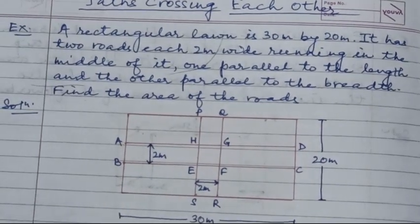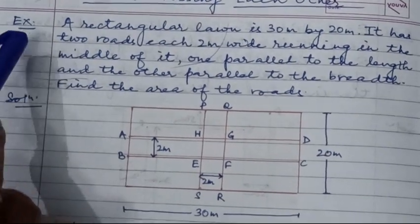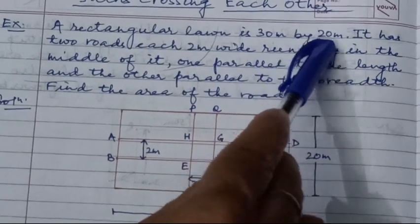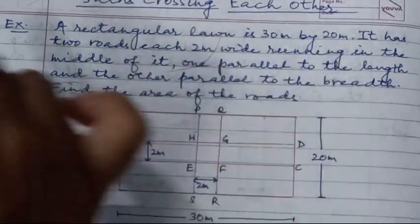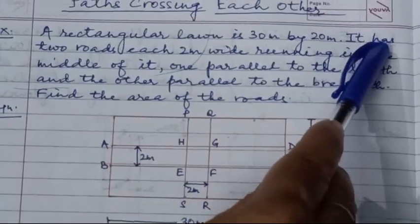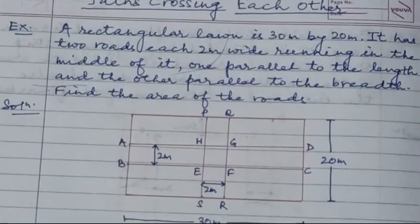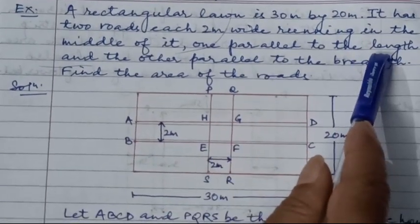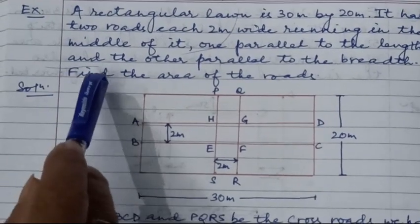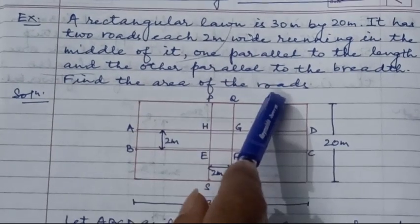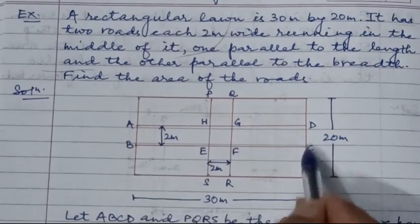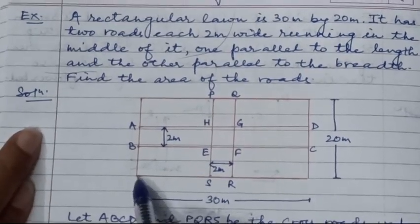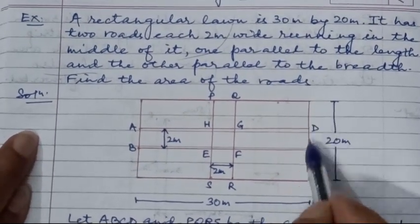Now see the question related to paths crossing each other. First question: A rectangular lawn is 30 meters by 20 meters — that is the length and that is the breadth. It has two roads, each 2 meters wide, running in the middle of it, one parallel to the length and the other parallel to the breadth. Find the area of the roads.